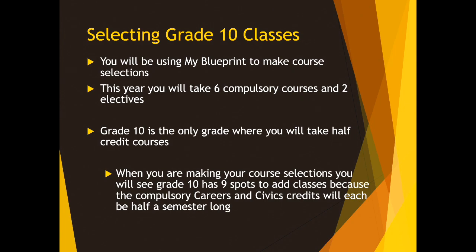Course selection this year will be done through MyBlueprint. Later in this presentation, I'm going to explain how to select courses using MyBlueprint — that's the program we will be using, and you will access it through MySite. This year, as you go into Grade 10, you will be selecting eight courses: six compulsory courses that you must take, and two electives. Grade 10 is the only year where you will take half-credit courses. When you log on to MyBlueprint, you'll see space for nine courses, because the mandatory courses Careers and Civics are each half-credit courses.